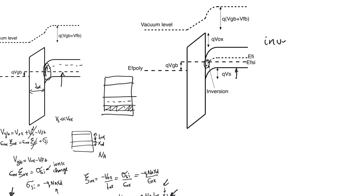We call this inversion mode. So now we have several modes for the MOS capacitor: thermal equilibrium (no externally applied potential), accumulation (where the hole concentration near the surface is higher than equilibrium), depletion mode (positive gate potential pushes holes away from the oxide surface, forming a depletion zone), and inversion mode (where the Fermi level rises above the mid-gap near the surface, leading to accumulation of electrons near the surface — inverting the type of silicon there).